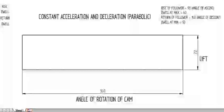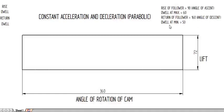Here we are going to study how to draw the follower diagram for a constant acceleration or deceleration motion, also called parabolic motion. The given data are: rise of the follower is 90 degrees, dwell at the maximum is 60 degrees, return of the follower is 160 degrees, and dwell at the minimum is 50 degrees. The lift of the follower is 72 mm on the y-axis, and the x-axis is the angle of rotation, which is 360 degrees.